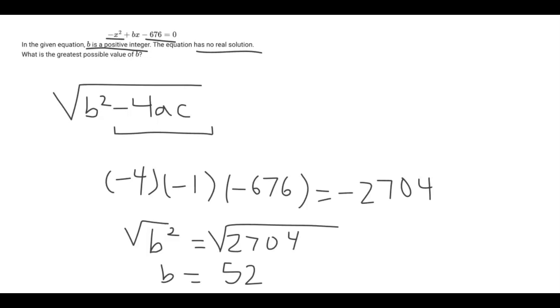We know that B is a positive integer. So in order for B to be a positive integer, it is just the number that is below 52. The next closest value under 52 would be 51.